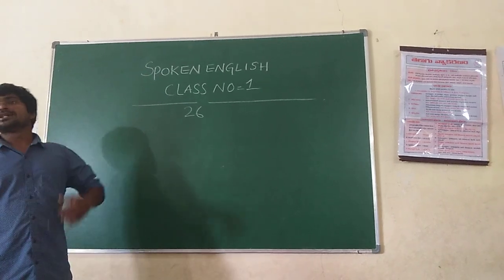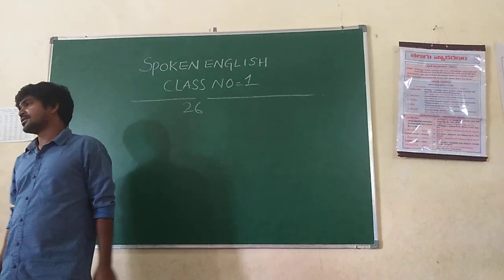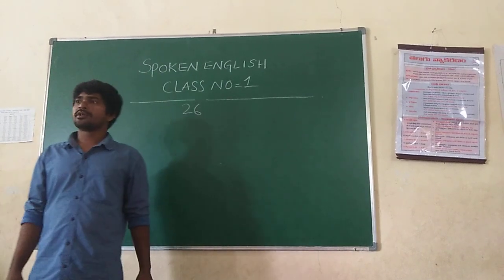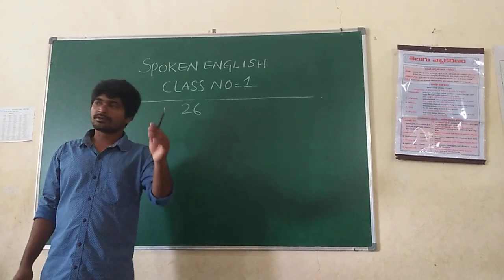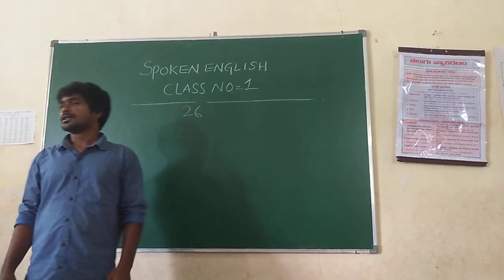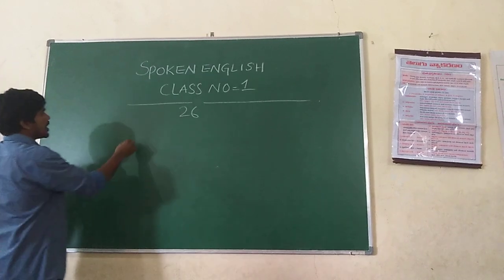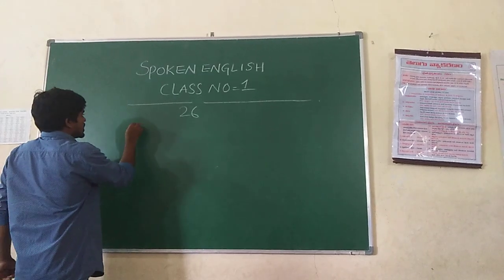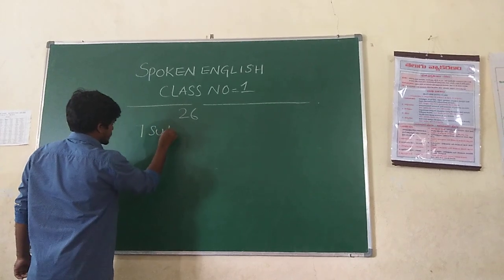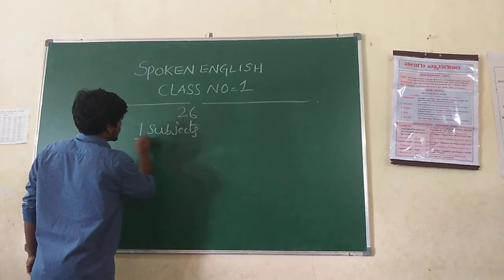How many subjects are there in the English language? 7 subjects. Very good. As you know, but let me recall one more time — we have 7 subjects. How many subjects? 7 subjects.